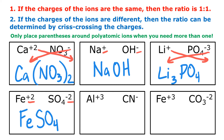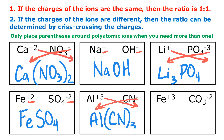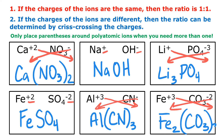Next I have aluminum with a plus three charge and cyanide with a negative one charge, so I crisscross. I get Al with subscript one and CN with subscript three. Because I need more than one of that polyatomic ion, I have to use parentheses — it doesn't matter whether the polyatomic ion has a subscript in itself; if I need more than one, I must use parentheses. So that's Al(CN)3. Finally, I have Fe plus three and CO3 negative two. They are different, so I crisscross and get Fe2 and CO3 with subscript three. Because I need more than one carbonate, I put parentheses around it: Fe2(CO3)3.